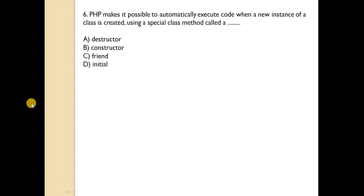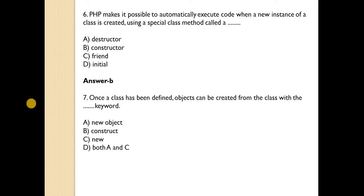PHP makes it possible to automatically execute code when a new instance of a class is created using a special class method called A. Answer is B, constructor.